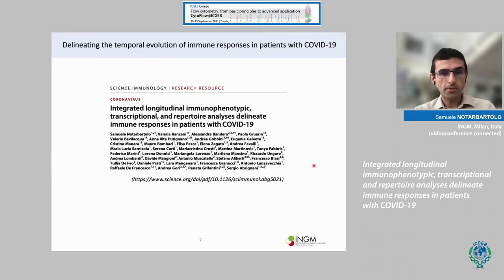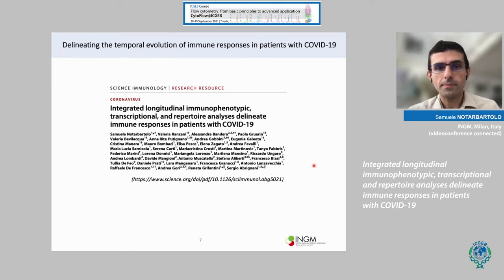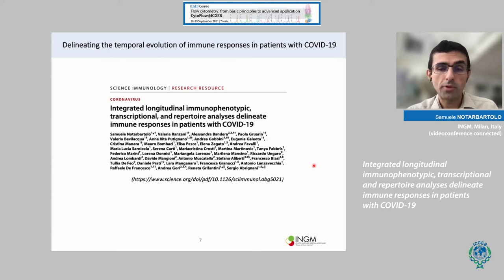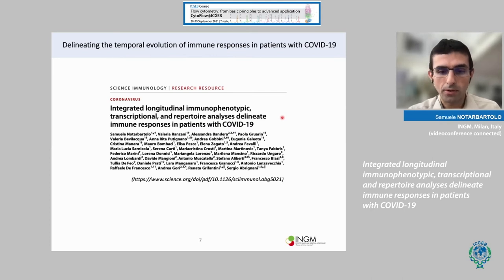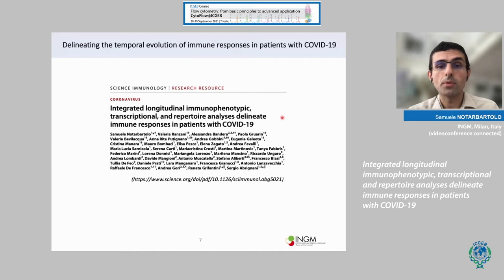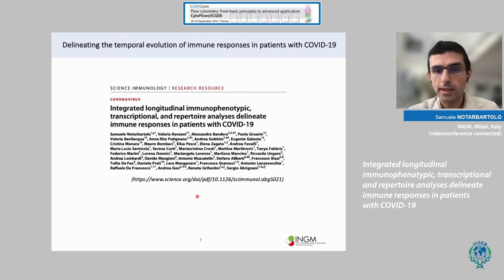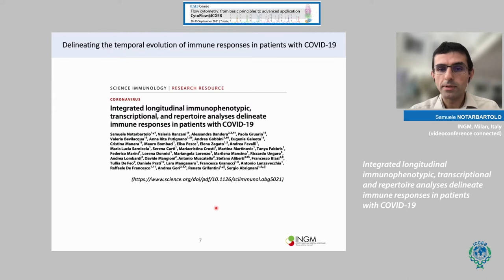So how did we contribute to the field? When we started this work, there was already something known about the immune response to infection, but knowledge about how the immune response developed over time was still quite limited. What we did was to integrate flow cytometry and single-cell sequencing techniques, together with serological analysis and antibody measurements, to see how the immune response developed in patients with mild and severe COVID-19. This work has very recently been published in Science Immunology.